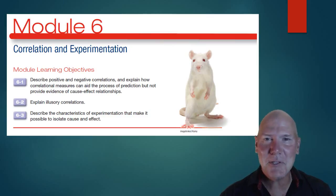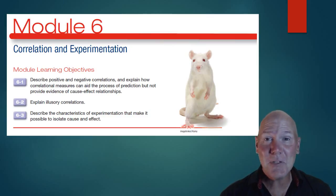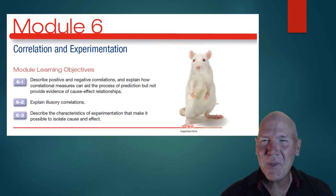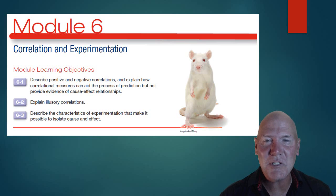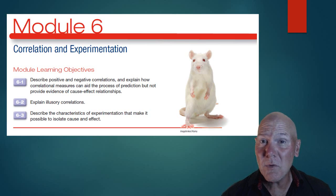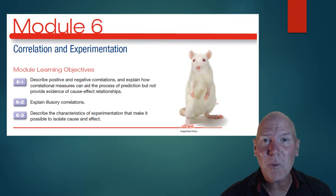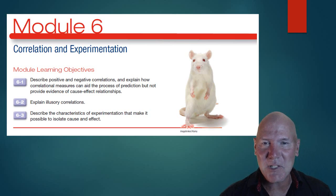All right, we're ready for Unit 2 Part 2. In the first section we looked at some errors in human thinking, the need for psychological science, and its descriptive methods that psychologists use to study. We're also going to move on here and look at a couple more methods, specifically correlations and also experiments.